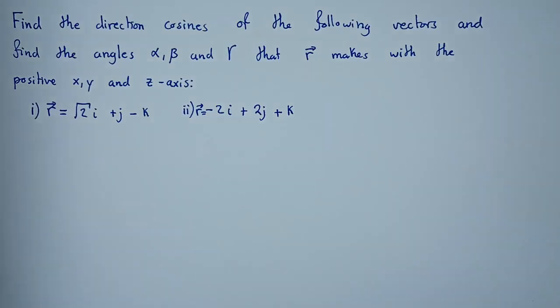Hello guys. So we have this question — let's see how we can go through it. It is under vectors. Find the direction cosines of the following vectors and find the angles alpha, beta, and gamma that the vector makes with the positive x, y, and z axes. So these are the vectors given. Let's break down this question step by step.